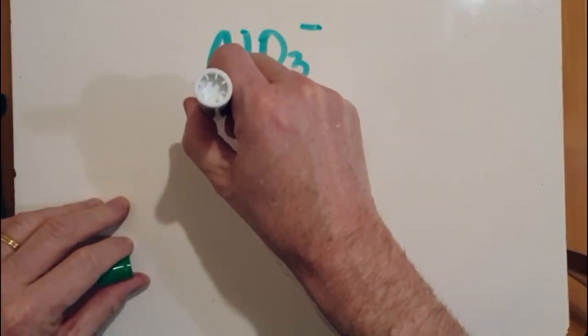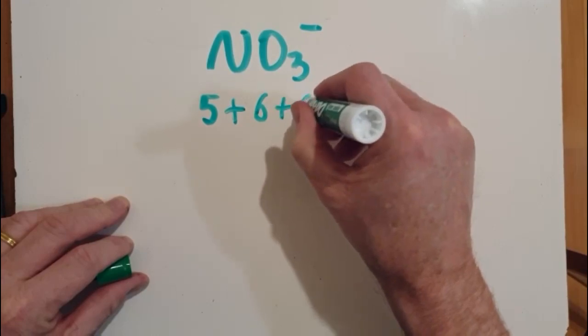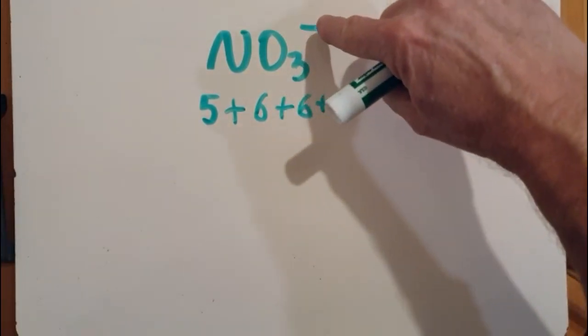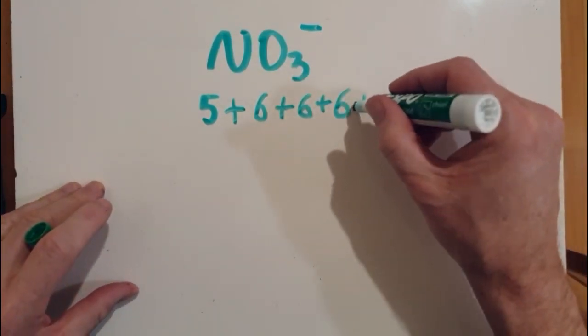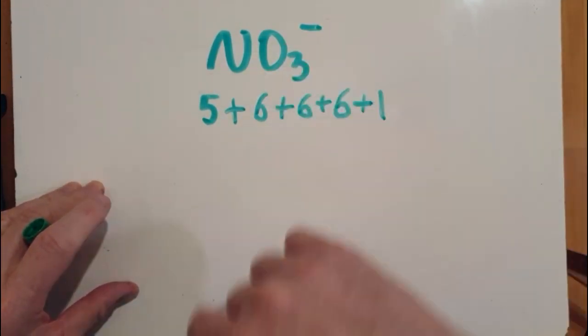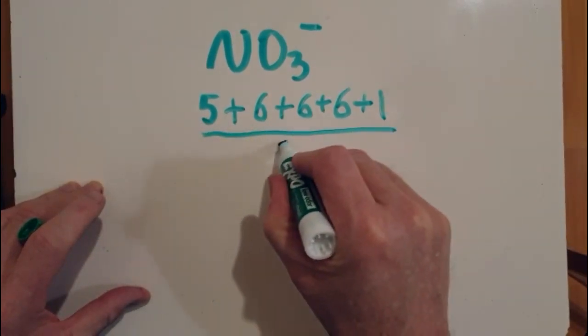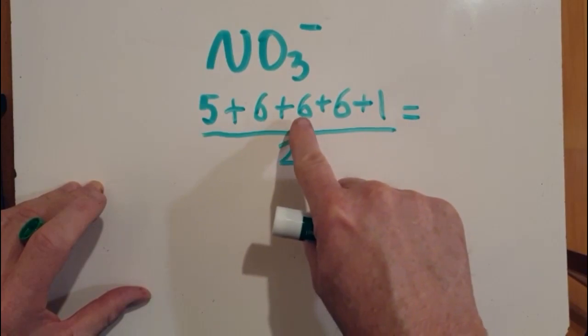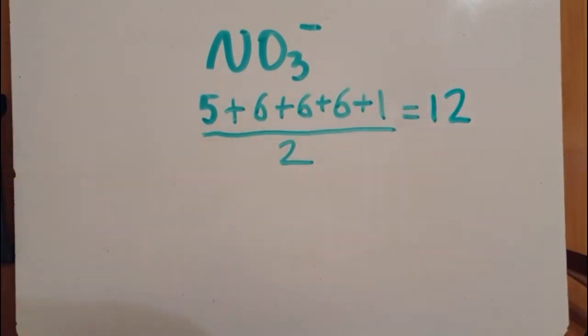So five from that nitrogen, six from each of the oxygens, and there's a negative charge there that indicates I have one more electron. Electrons are negative and there's an extra negative. Now I'm interested in the pairs of electrons, so divide by two, and that's going to give me 12. So I have 12 pairs of electrons.